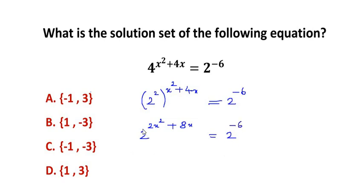Now once we get the bases same as 2 and 2 on both sides of the equation, we can just cancel them and equate only the powers. So we get 2x² + 8x equals negative 6.